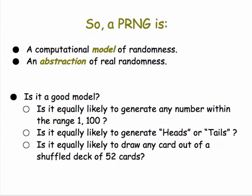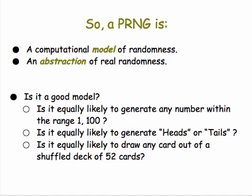To sum up, a PRNG is a computational model of randomness. As such, it's an abstraction — a simplification of true randomness. Whenever you have a model of something, you can ask: is it a good model? In this case, that would mean: does it give a good distribution of numbers in the range 1 to 100? If you use it to simulate a coin flip, does it give a good 50-50 distribution of heads and tails? What about drawing a card — are the odds going to be 1 in 52 that you draw the ace of spades? In the next lesson, we're going to ask this type of question about App Inventor's PRNG.